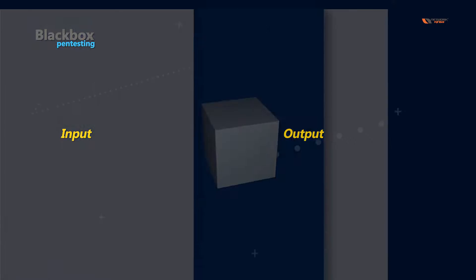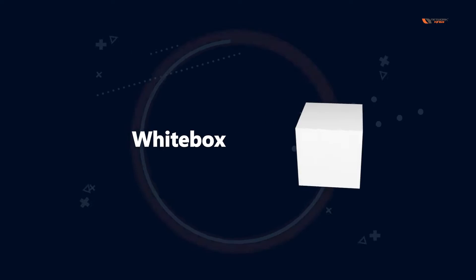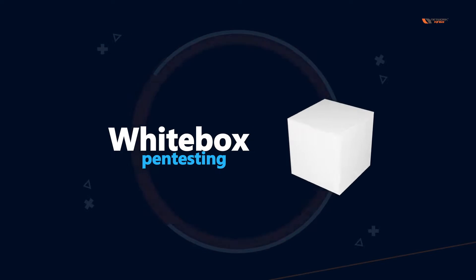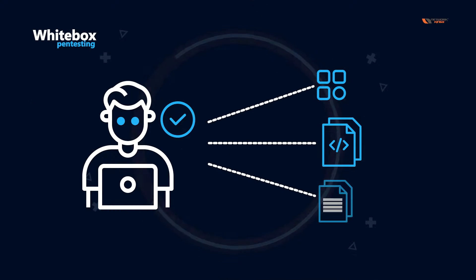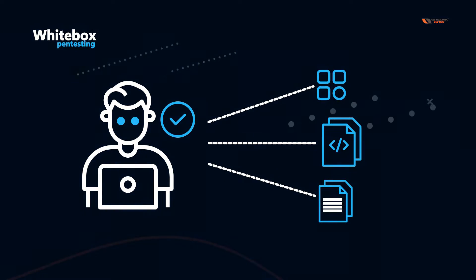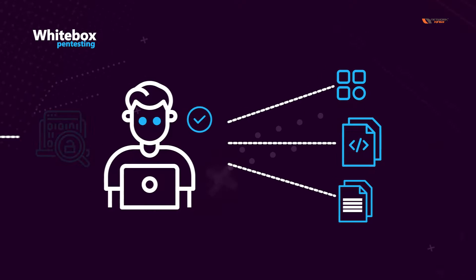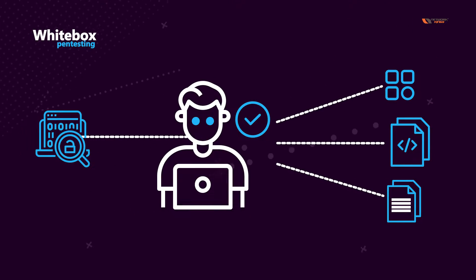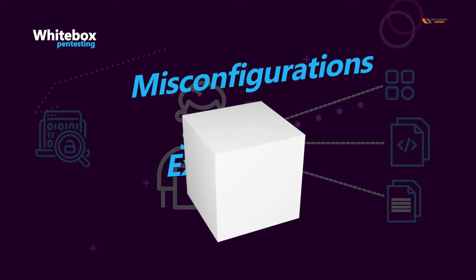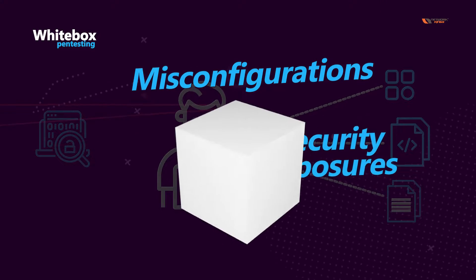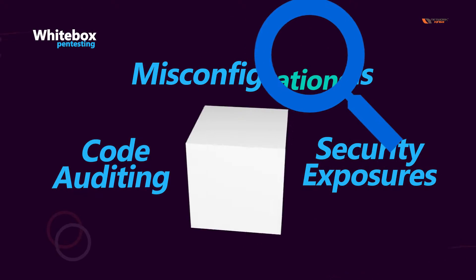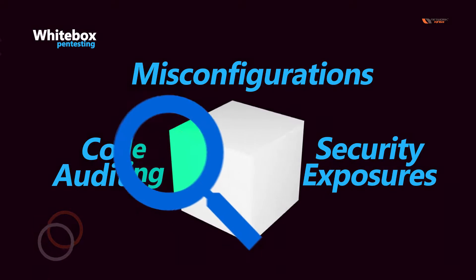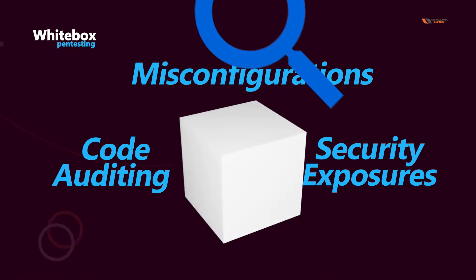White box pen testing is going to provide the pen tester some access to their applications, their code, and their documentation. With this, the pen tester would identify logical vulnerabilities, specific security exposures, misconfigurations, or — for example if they are performing code auditing — they can point out the mistakes made by the developers.